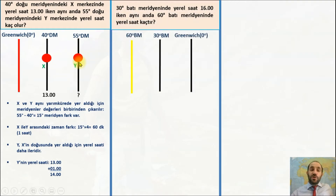Güneş ayrıca 55 derece doğu meridyeninde de önce doğar, önce batar; bilginize.